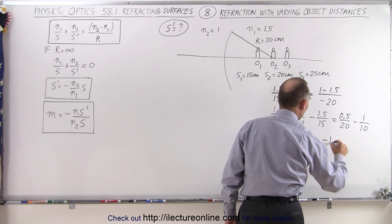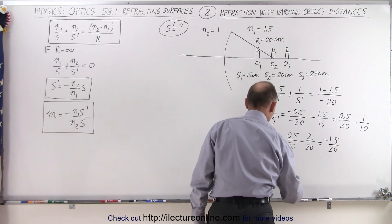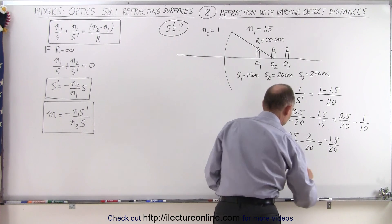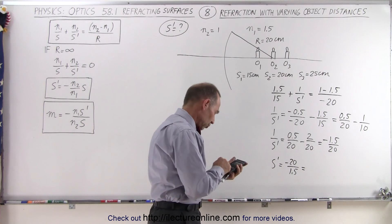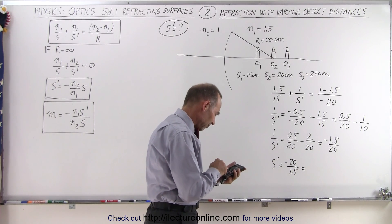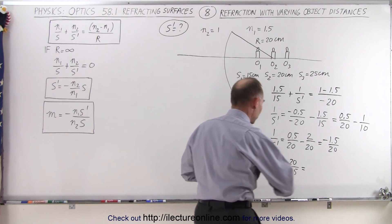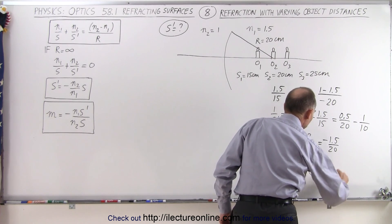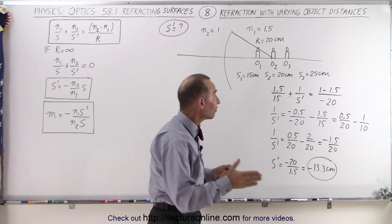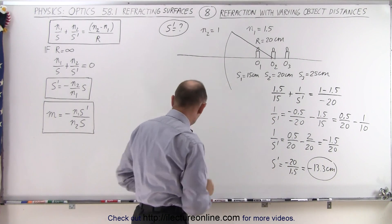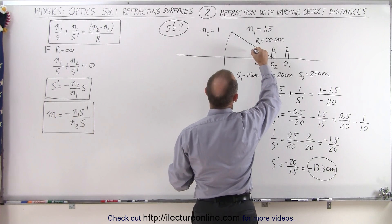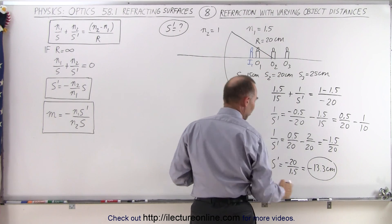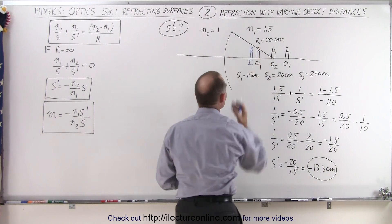So minus 2 plus 0.5 equals minus 1.5 over 20, and therefore S prime equals minus 20 over 1.5. That gives us negative 13.3 centimeters, which means the image is on the same side as the object and a little bit closer. So here we have image number 1 at a distance of 13.3 centimeters away from the boundary.